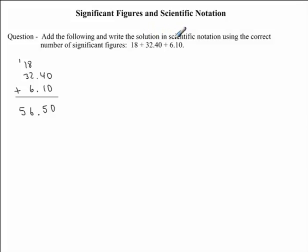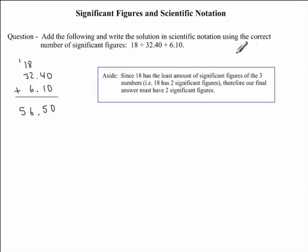Out of these three numbers, the one that had the least amount of significant figures was 18. So this is going to determine how many digits we're going to have in our final answer. Since 18 has the least amount of significant figures of the three numbers, i.e., 18 has two significant figures, therefore our final answer must have two significant figures.